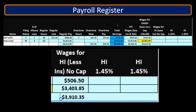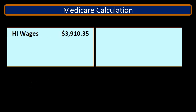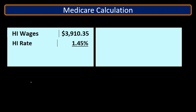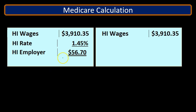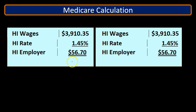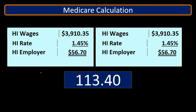Now we'll do the calculation. We're going to start with the total and calculate the total for the employer and employee portions of HI, or Medicare. We'll take the total HI wages of $3,910.35 times the rate of 1.45%, or 0.0145, and we get $56.70. The same calculation for the employer portion — HI wages times 0.0145 — also gives $56.70. Adding those two together gives us $113.40 for the combined employer and employee portion.